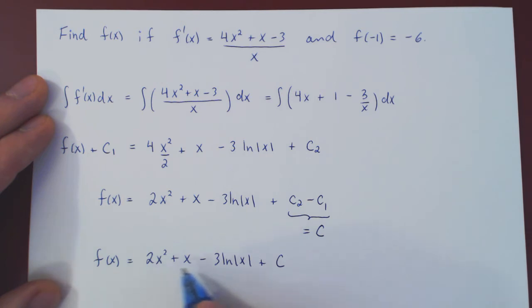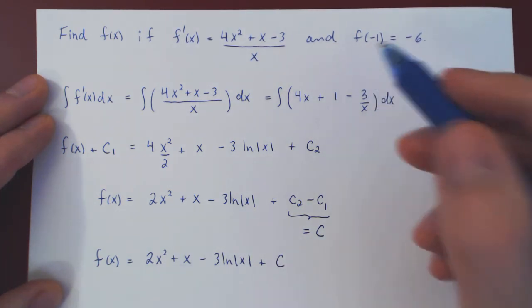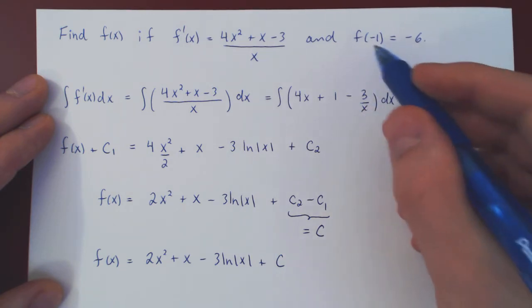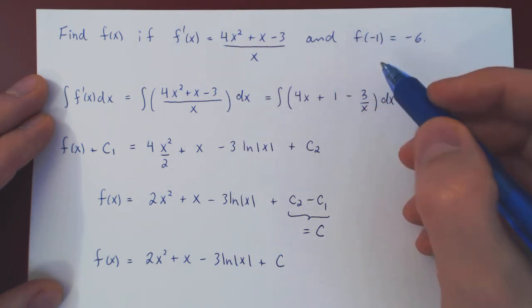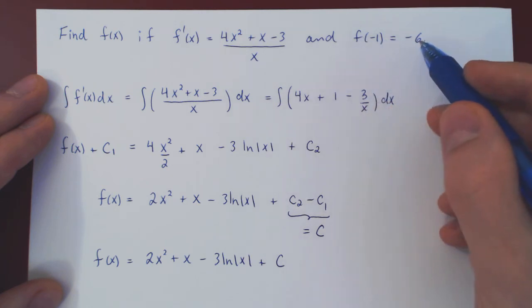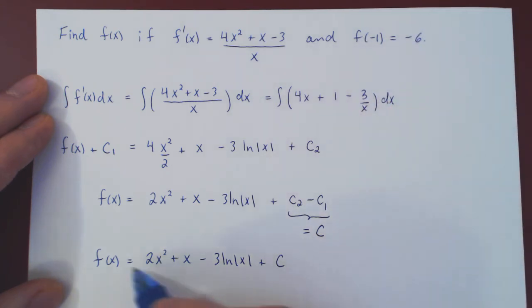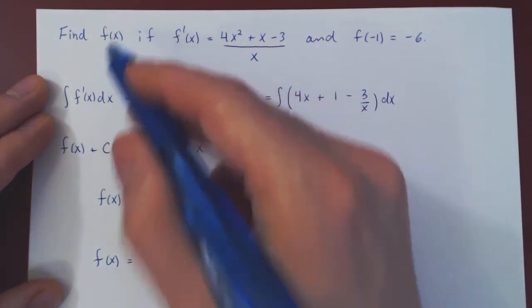So now we have an infinite number of possible functions. Well, the one thing we haven't used is our initial condition. The fact that when x is -1, the function obtains a value of -6. So we can plug it in. This will give us an equation that will allow us to solve for c and obtain a unique function.